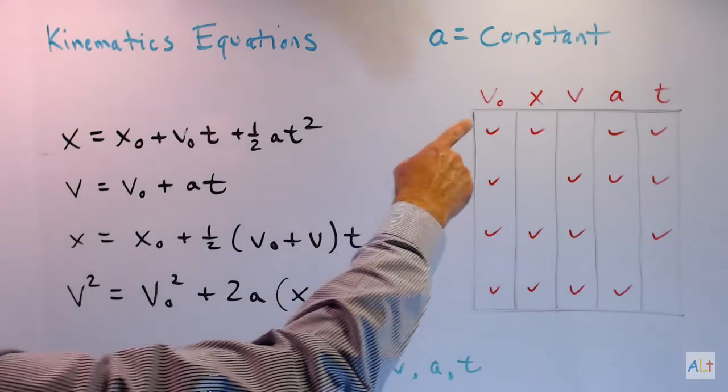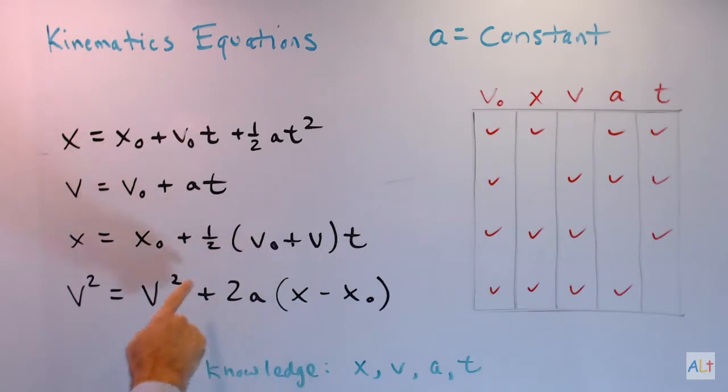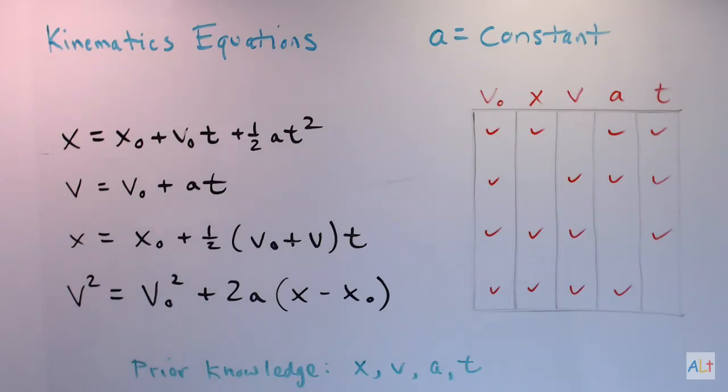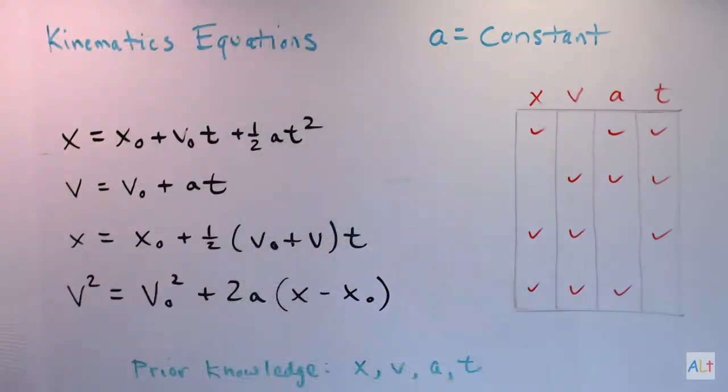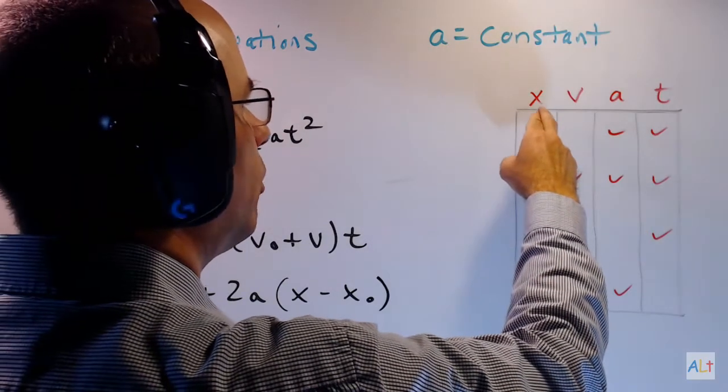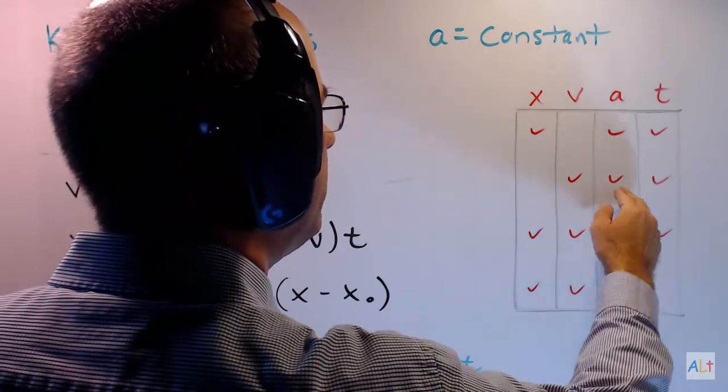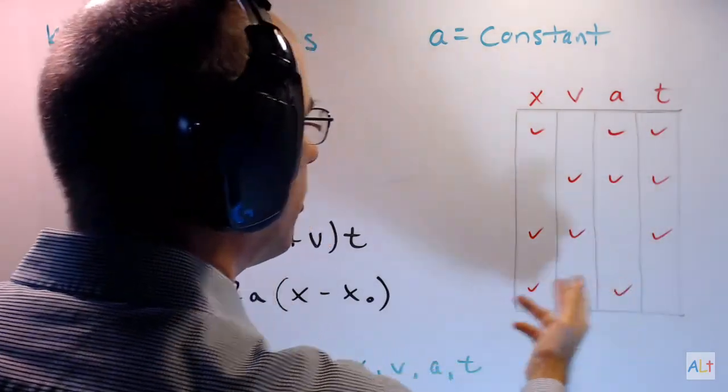Next up, initial velocity. Notice that all four formulas have the initial velocity. So that doesn't help you to decide which formula to use because it's in all of them. So let's erase this. So now we're starting to see a useful pattern. Out of these four variables, x, v, a, and t, every possible combination of three out of the four is covered by one of these equations.